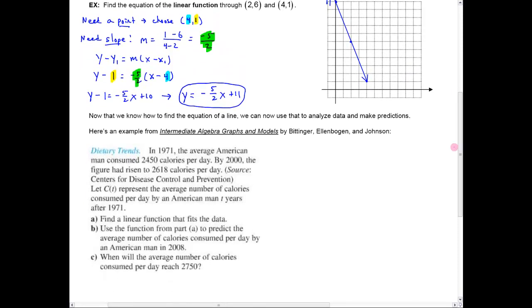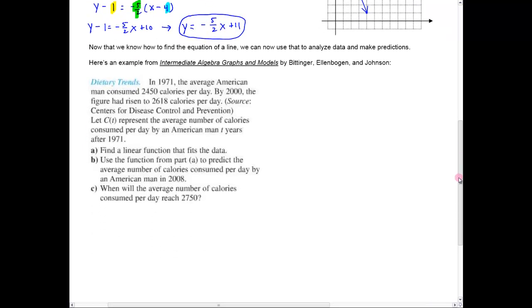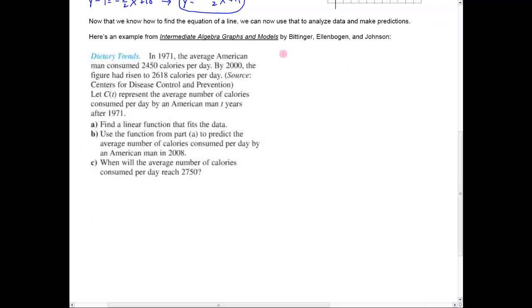So now, let's use this information to analyze some data and make some predictions, finding the equation of a more real-life sort of problem here. The problem here that I've taken from Intermediate Algebra Graphs and Models by Bittinger, Ellenbogen, and Johnson, says that in 1971, the average American man consumed so many calories per day. And then by 2000, 29 years later, it had risen to 2,618 calories per day. So, the idea here is that over those years, American men have been eating more and more on average.